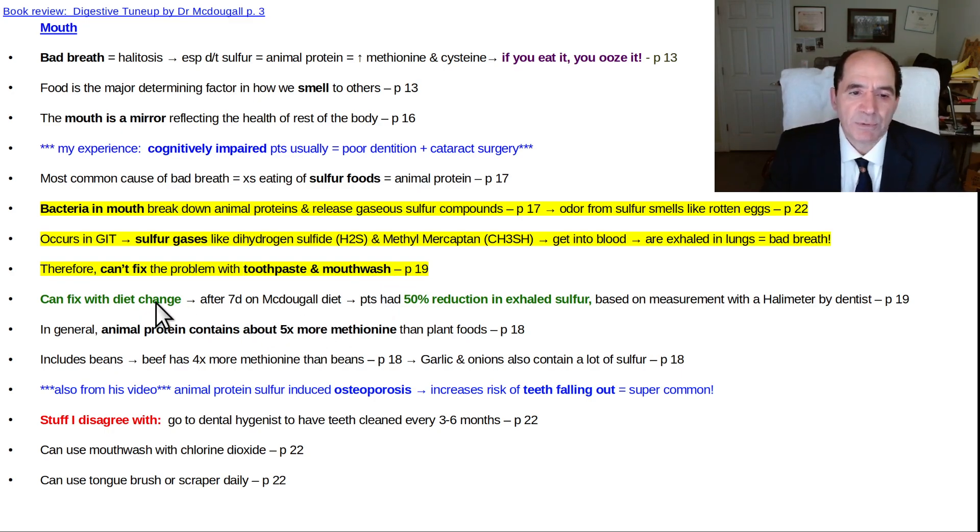McDougall said you can fix your breath by just fixing your diet. He says after seven days on a McDougall diet, patients had a 50% reduction in exhaled sulfur based on a measurement with a halometer by a dentist. So that's a halitosis meter. He had a dentist friend who was able to measure the amount of exhaled sulfur. It would drop by 50% after seven days when they went on the McDougall diet, which is a low-fat, vegan diet with no oils.